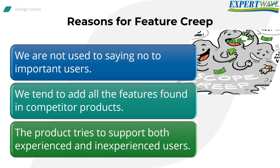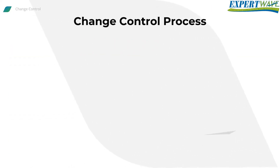Feature creep should be controlled using a change control management system. The bigger the system, the more formal and controlled the change control system should be. The process of change control is generally performed as a series of steps.